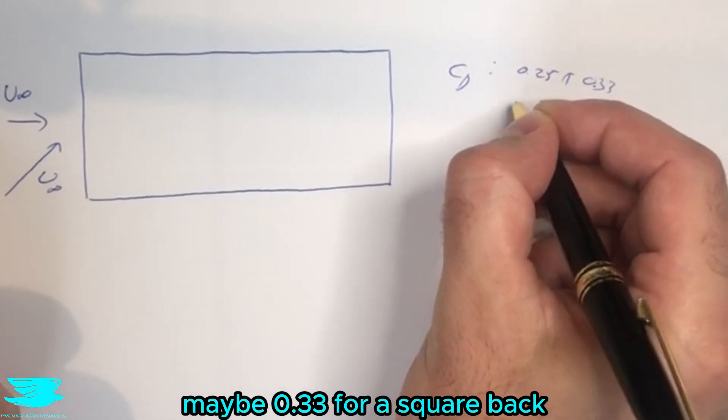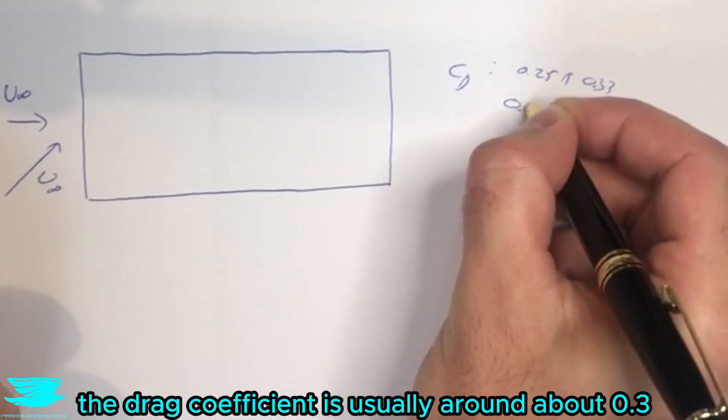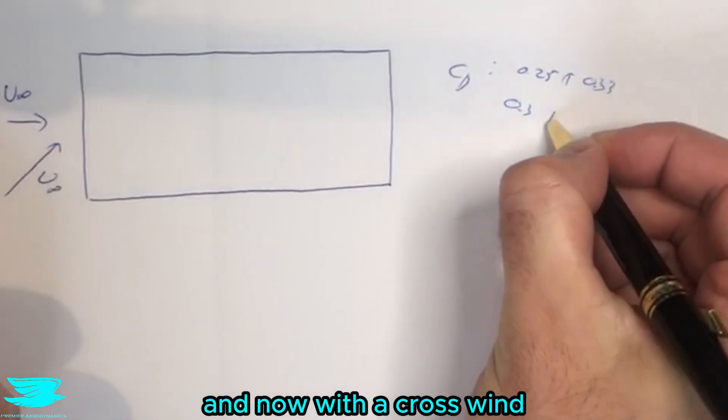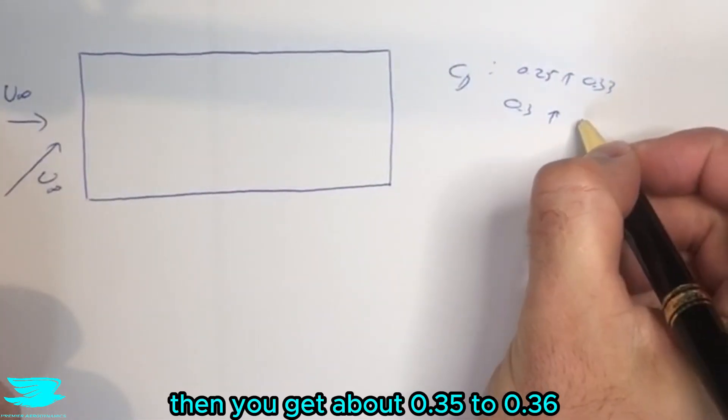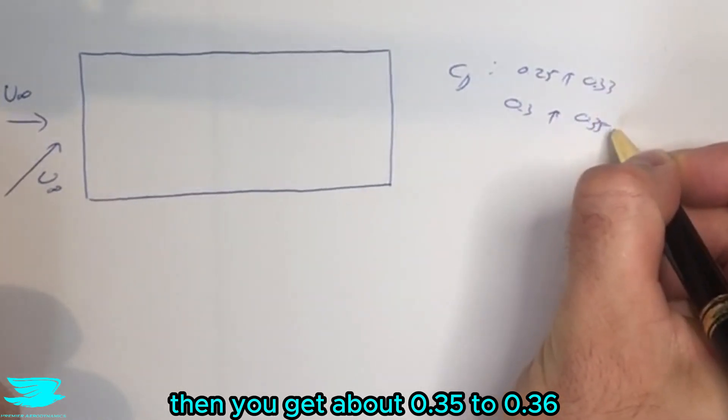For a squareback the drag coefficient is usually around about 0.3 with a head-on wind, and now with a crosswind of let's say 10 degrees or so then you get about 0.35 to 0.36.